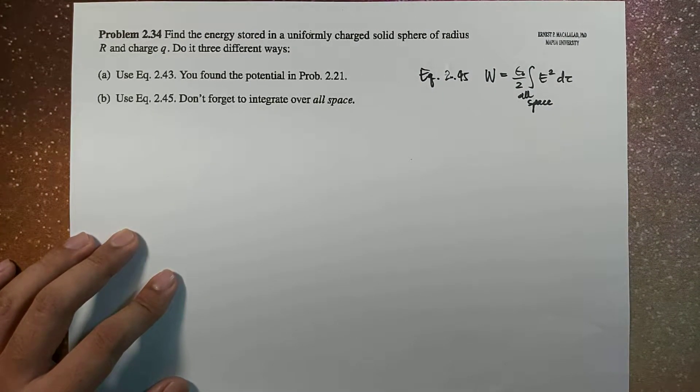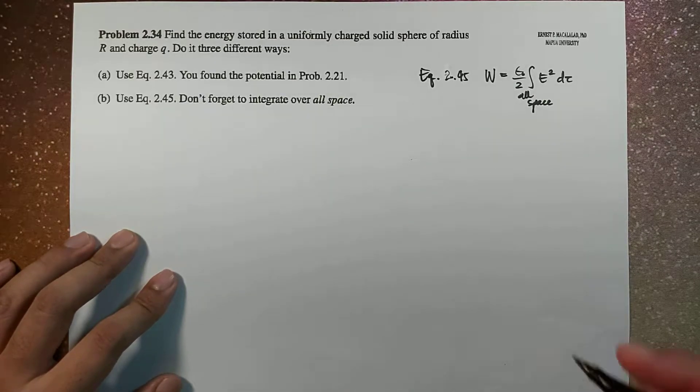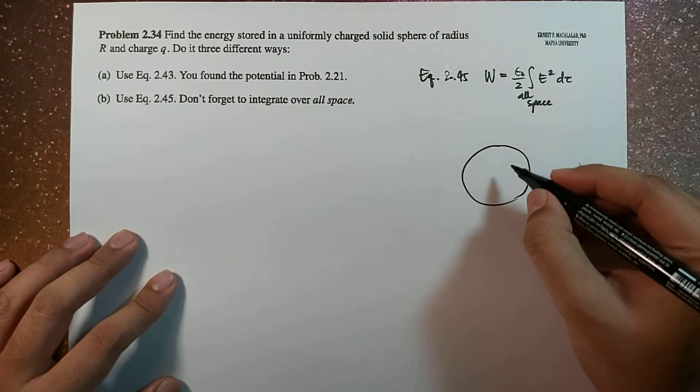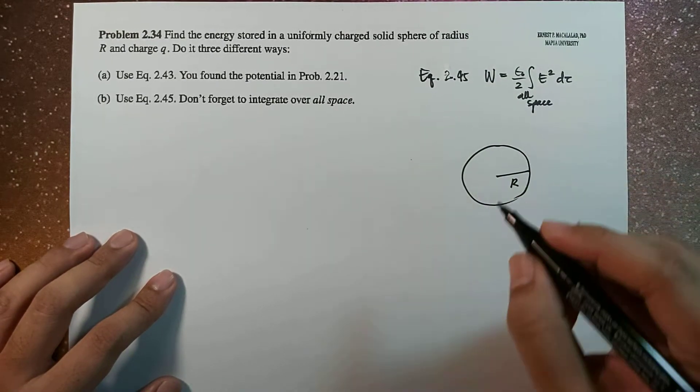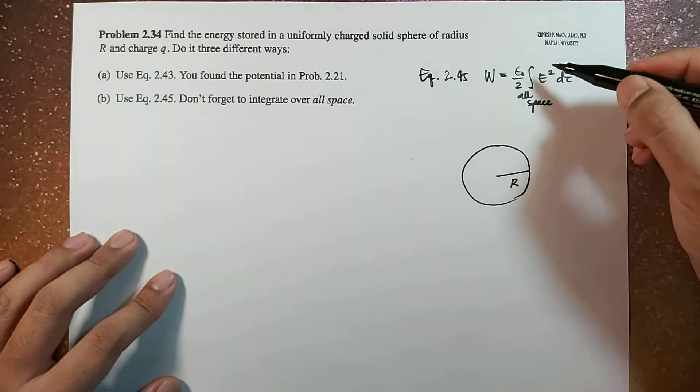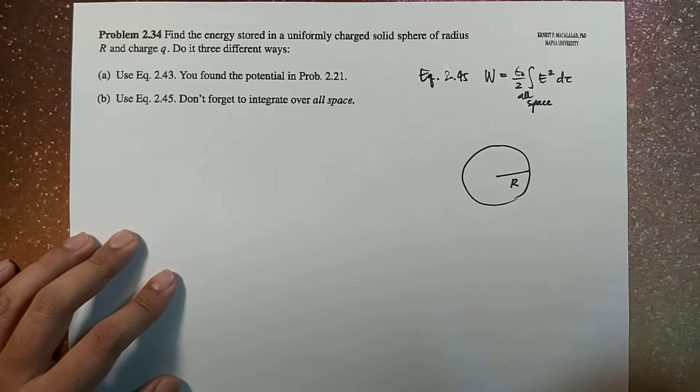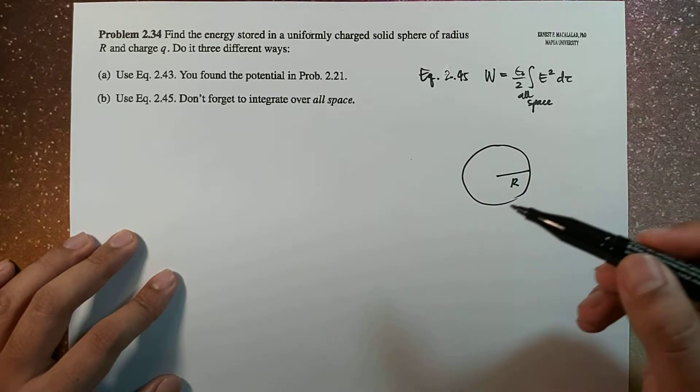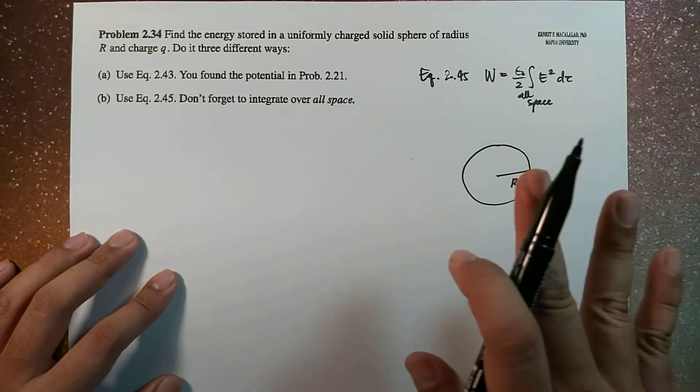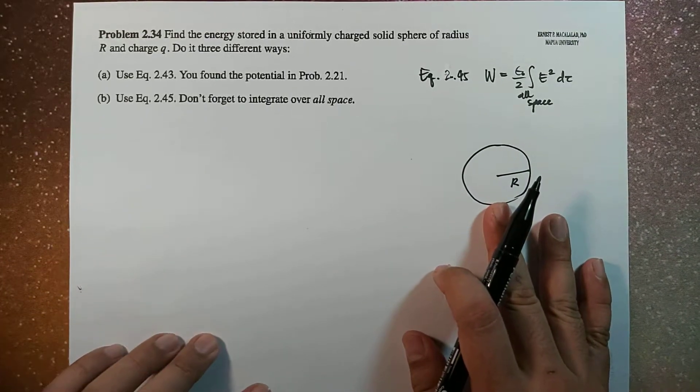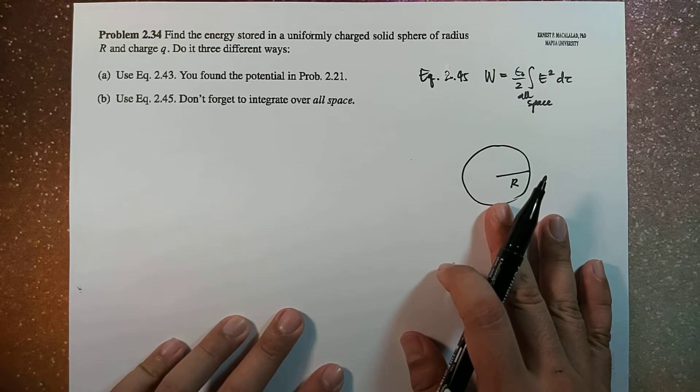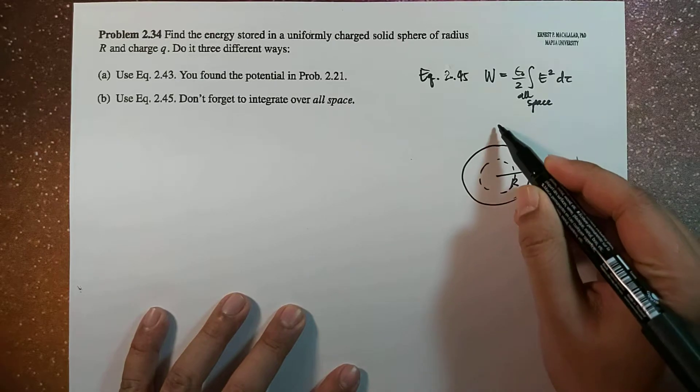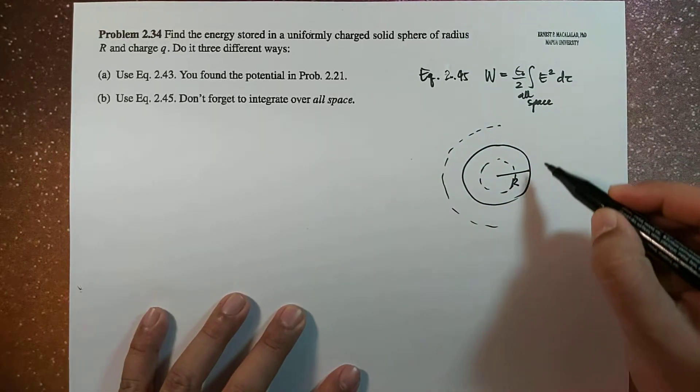Okay, so that means we need to know the electric field due to this uniformly charged sphere of radius R. If we're going to integrate all space, we need to use specific expressions for electric field for all possible regions in this configuration. So in this case, there are two regions that we should look into: one is inside and another one would be outside.